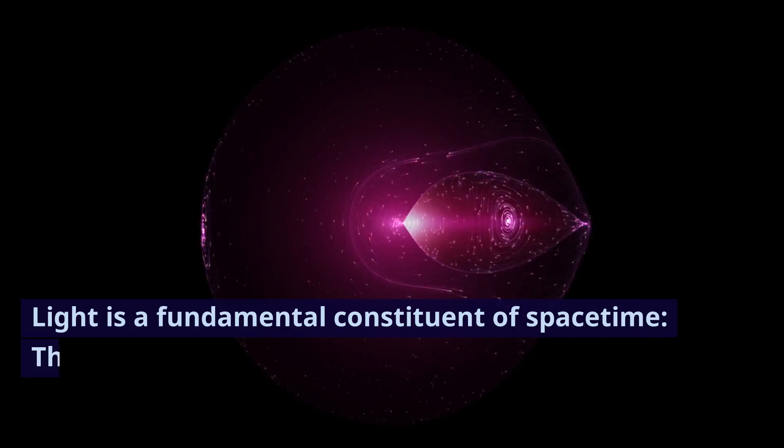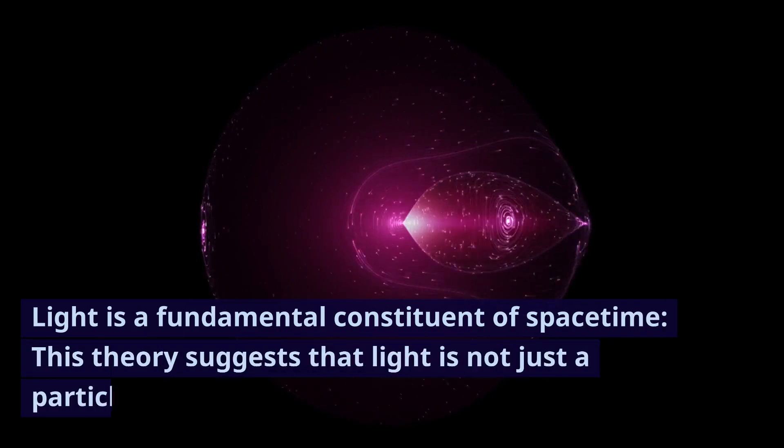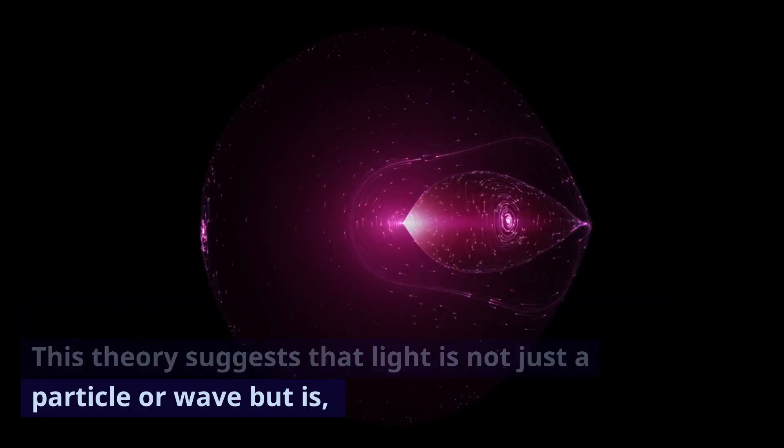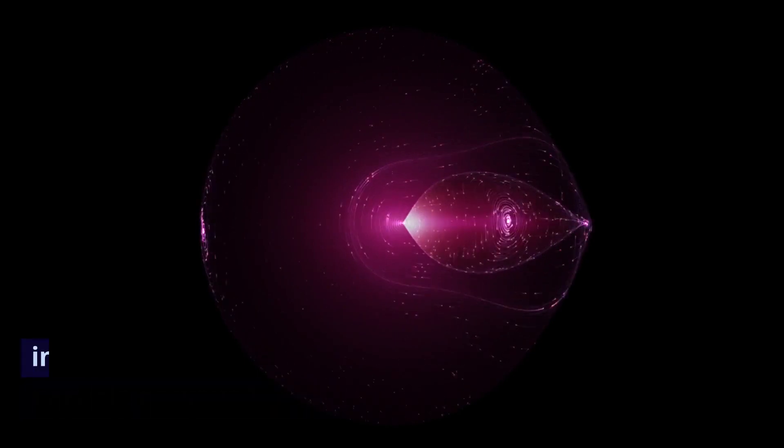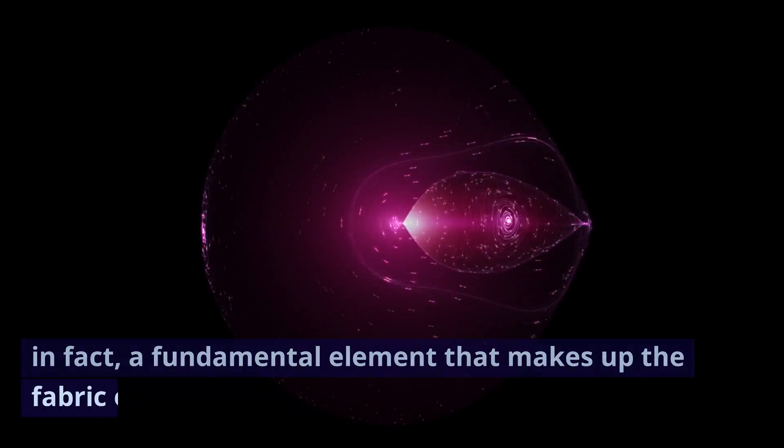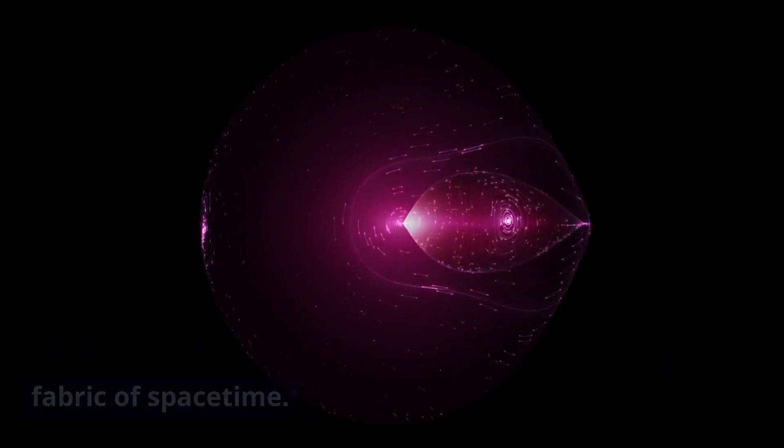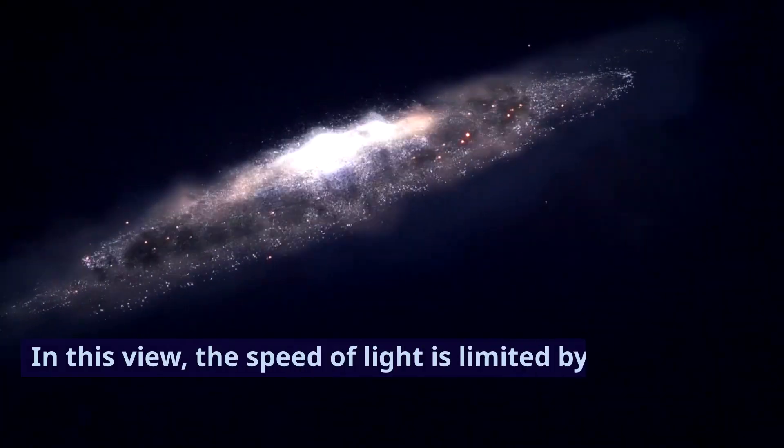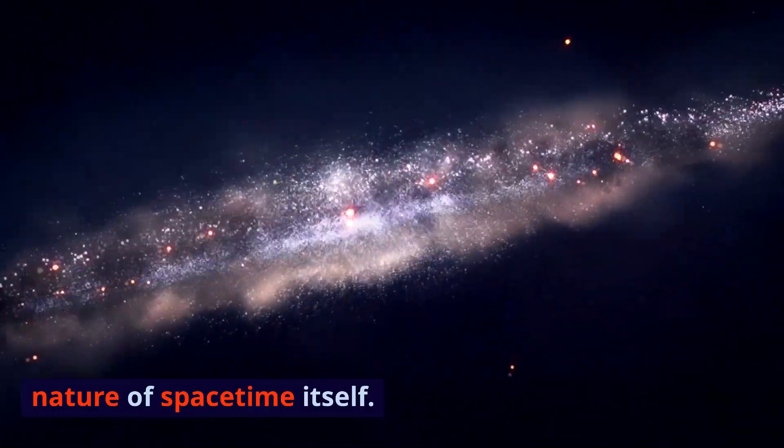Light is a fundamental constituent of spacetime. This theory suggests that light is not just a particle or wave but is, in fact, a fundamental element that makes up the fabric of spacetime. In this view, the speed of light is limited by the nature of spacetime itself.